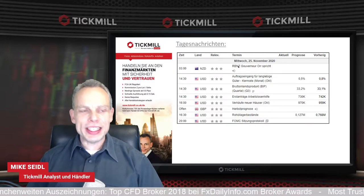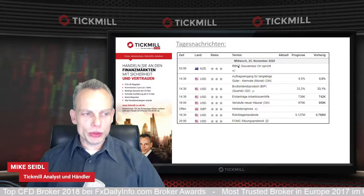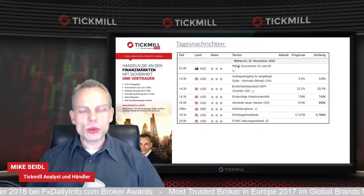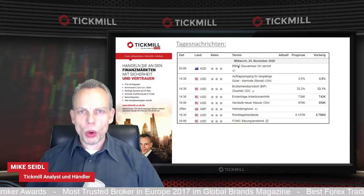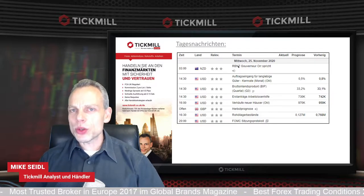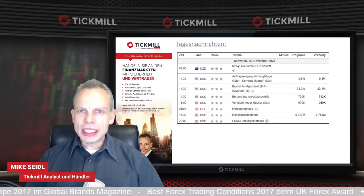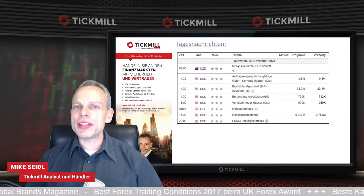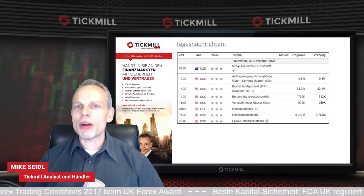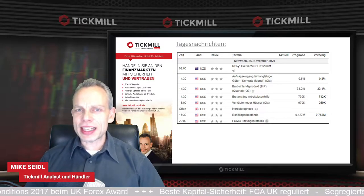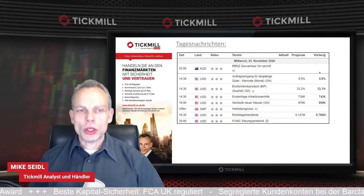Looking at today's news schedule: at 14:30 we get durable goods orders, GDP, and initial jobless claims. At 16:00, new home sales. At 16:30, crude oil inventories. And at 20:00, the FOMC meeting minutes - published without a press conference. The next press conference should be in December, where we expect announcements about policy measures following the US government transition.